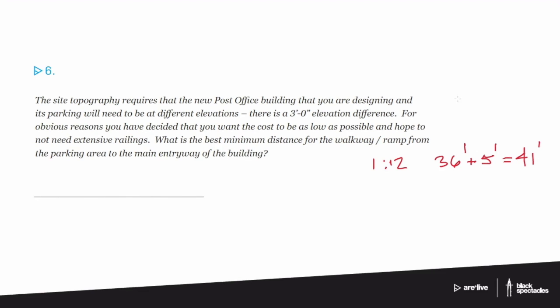Why not? Because the other key thing it said was we want to keep the cost as low as possible and not need extensive railings. If we're going to do an accessible ramp, it's going to have curbs, it's going to have railings, it's going to have railing extensions, it's going to have all the things that any ramp would have to have. That's going to be very expensive and we've specifically said we don't want that. So what would be the minimum that we could do and not have that?